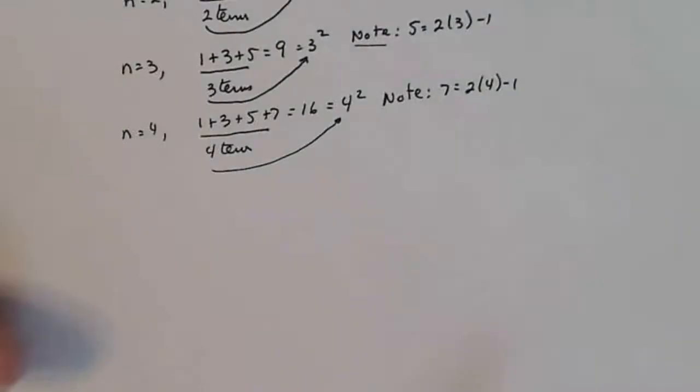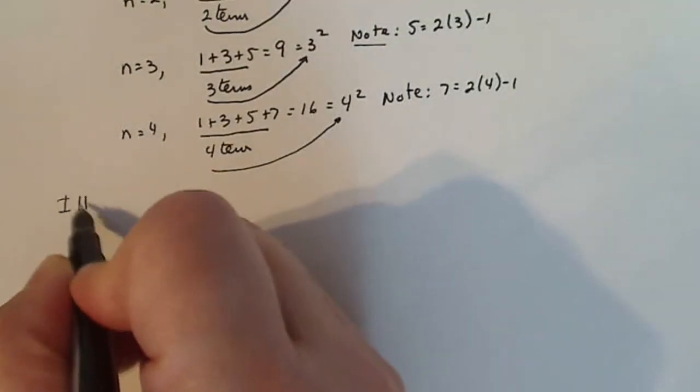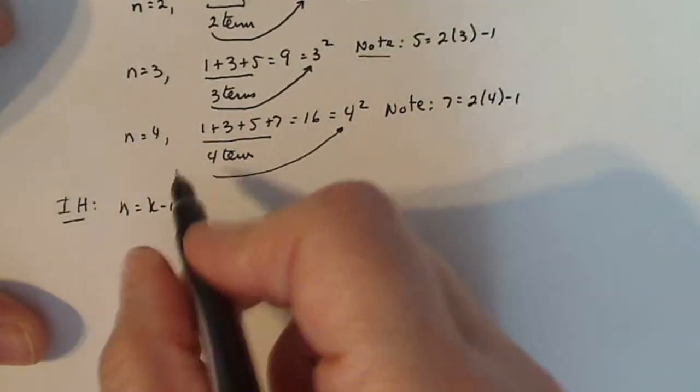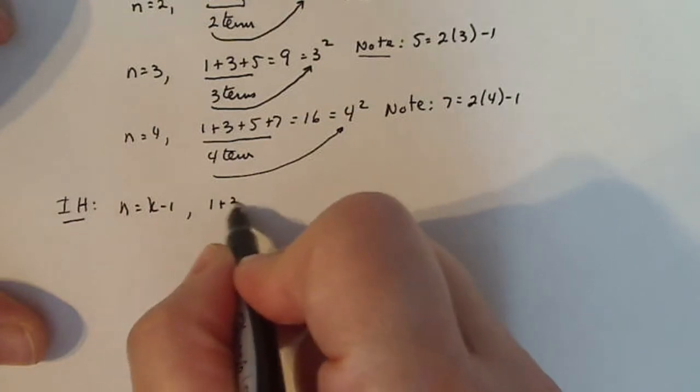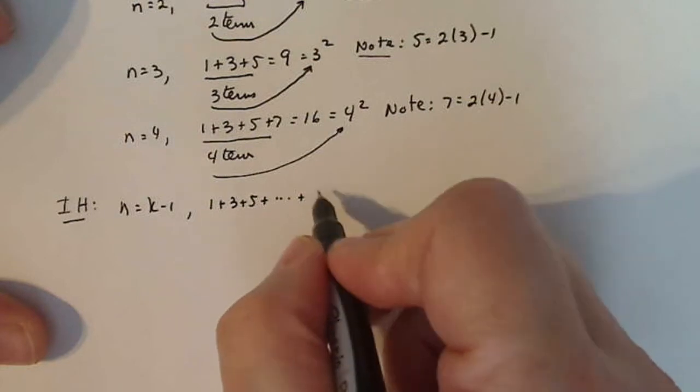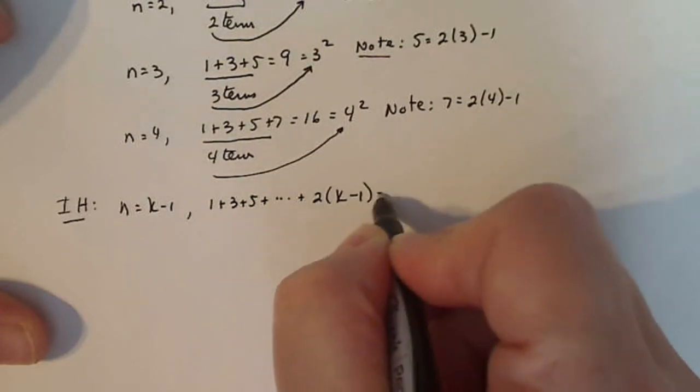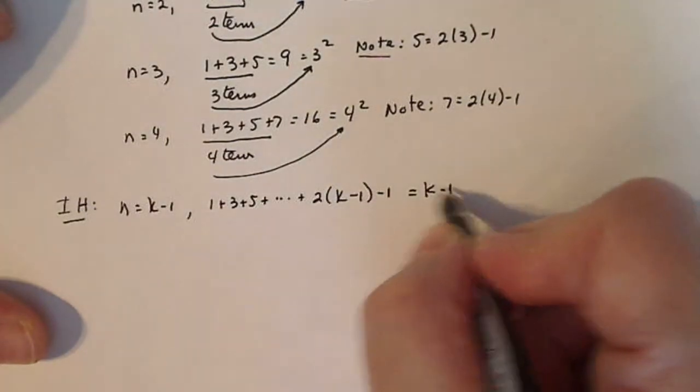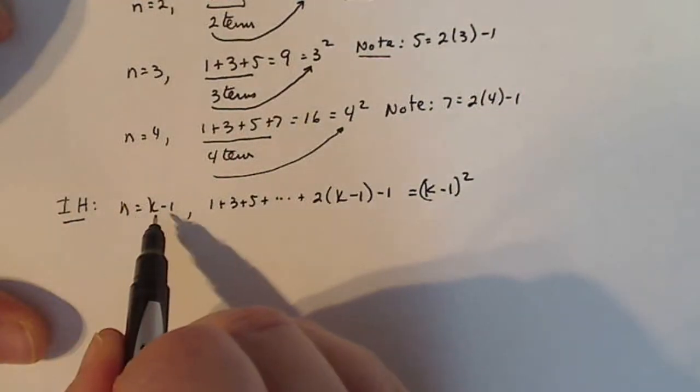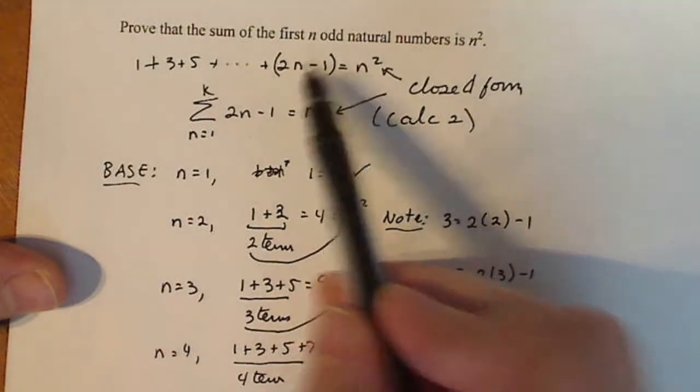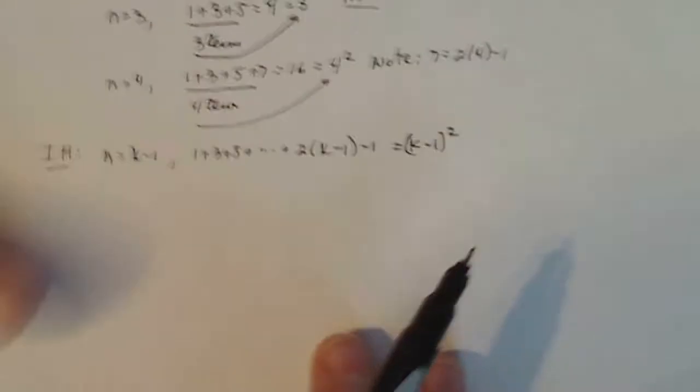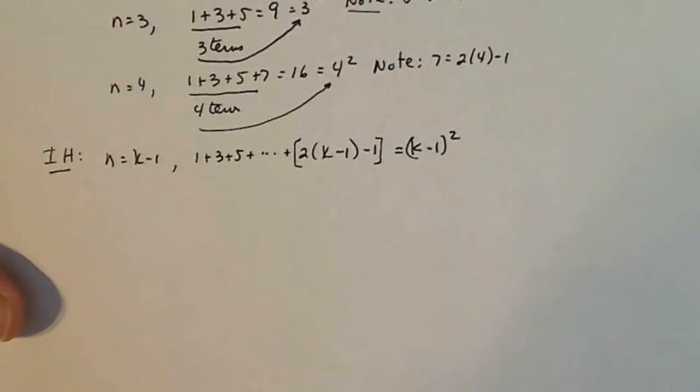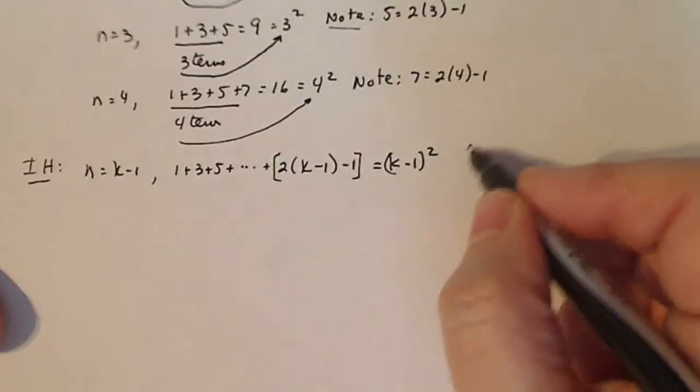Let's go on to the inductive hypothesis. So the inductive hypothesis, well, I'm just going to follow the same thing. I'm going to say n is equal to k minus 1. And that means I'm going to be doing 1 + 3 + 5... up to 2 times (k - 1) minus 1. And I'm going to assume that's going to be (k - 1) squared because I replaced n with k minus 1. So I have to replace n with k minus 1 and n with k minus 1. Let's put brackets here to kind of keep that separate. And that is truth. It's a true statement.